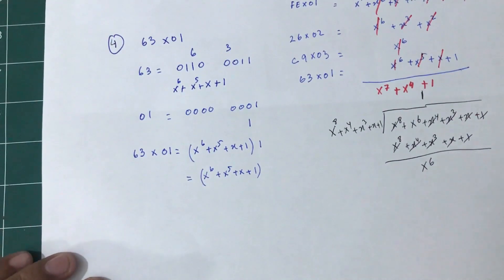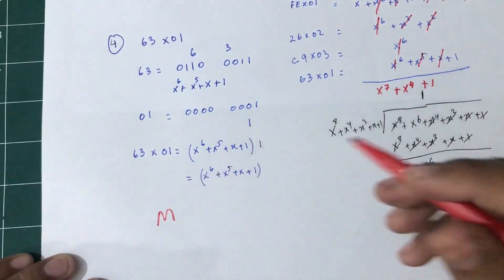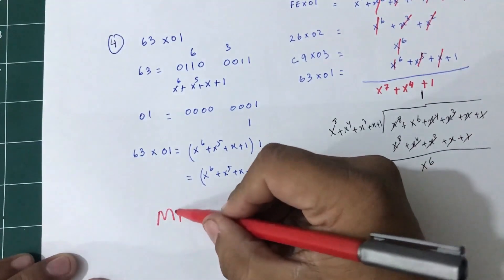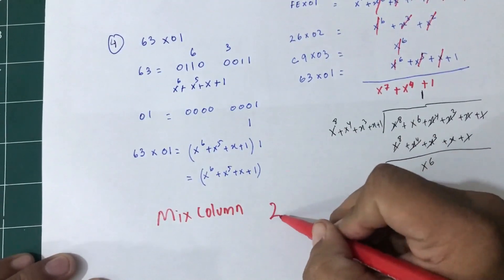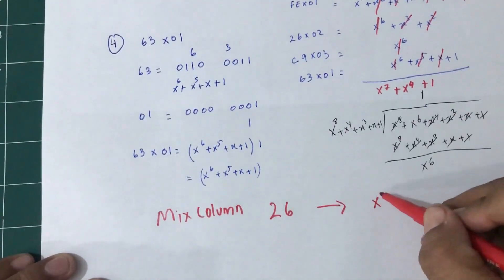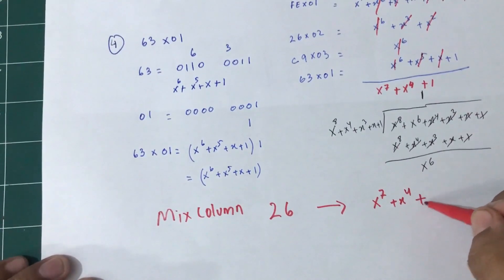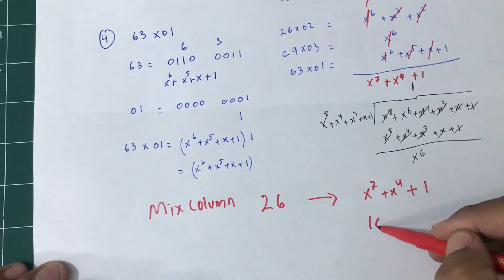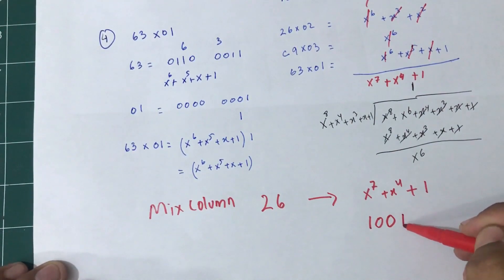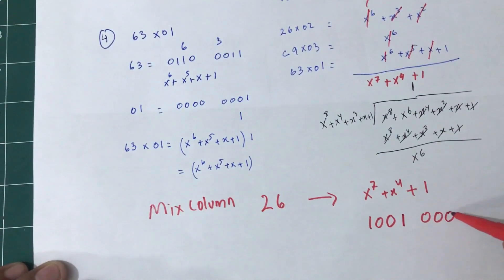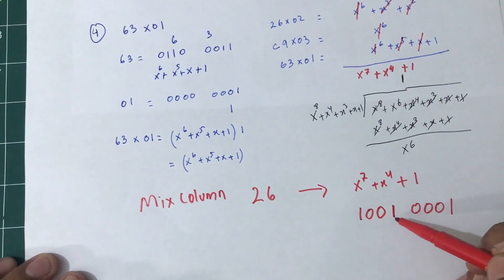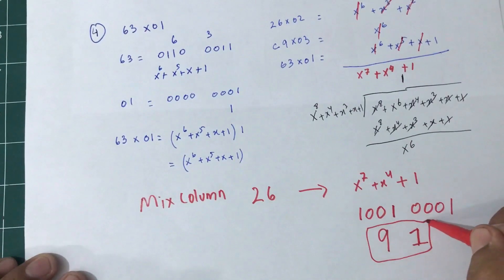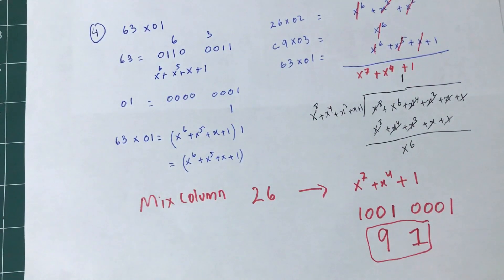So let's transform this using mix column. 26 is x to the 7 plus x to the 4 plus 1. Quickly: x to the 7 is 1, x to the 6 is 0, x to the 5 is 0, x to the 4 is 1, all the rest are 0, and the constant is 1. So in binary: 1 0 0 1 0 0 0 1 — that's 8 plus 1 equals 9, making this 91. So 91 should be my answer when I transform this into mix column.